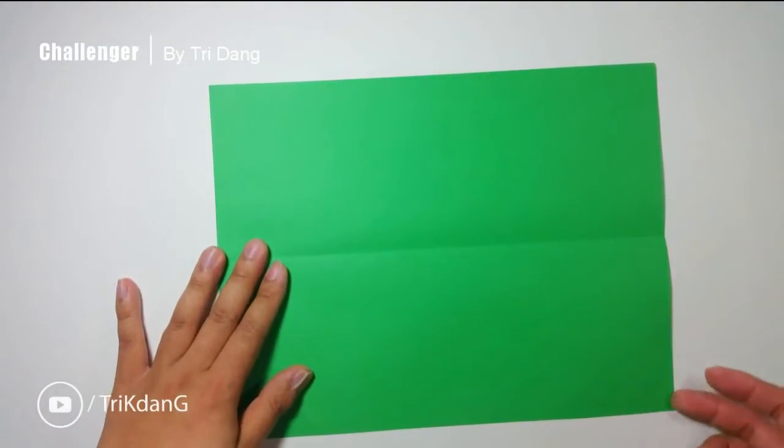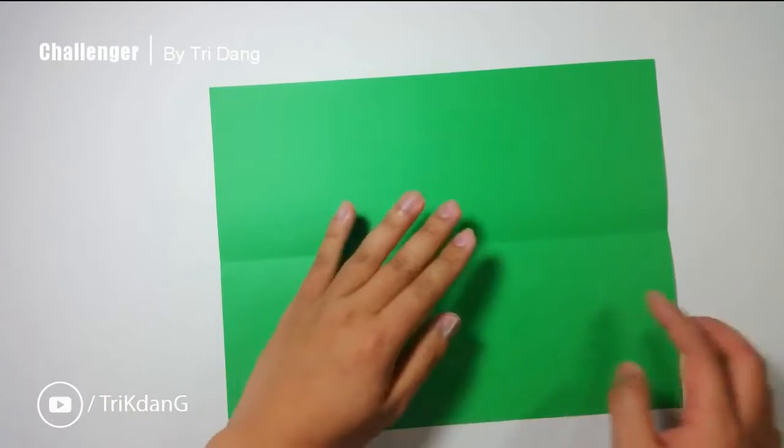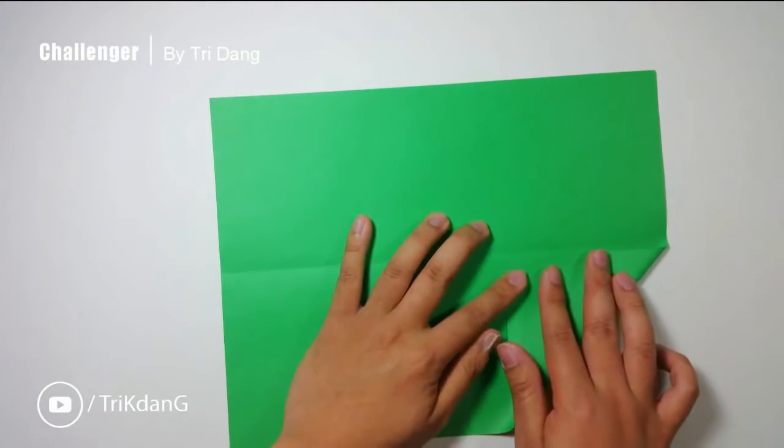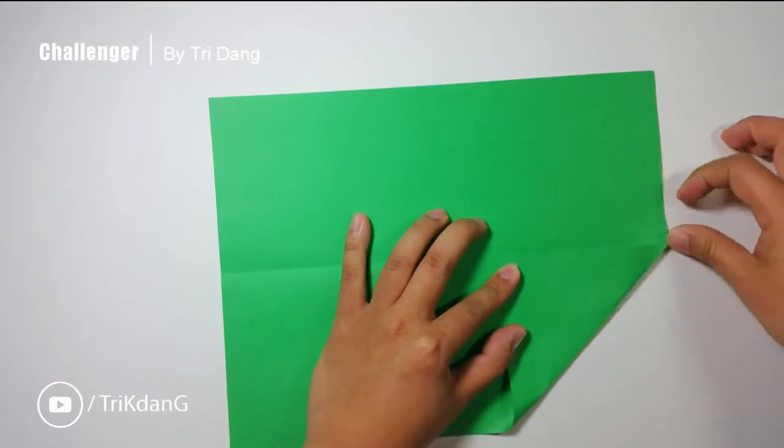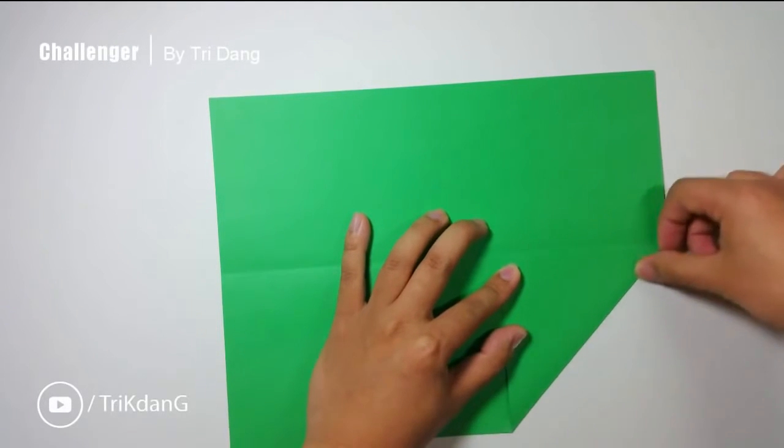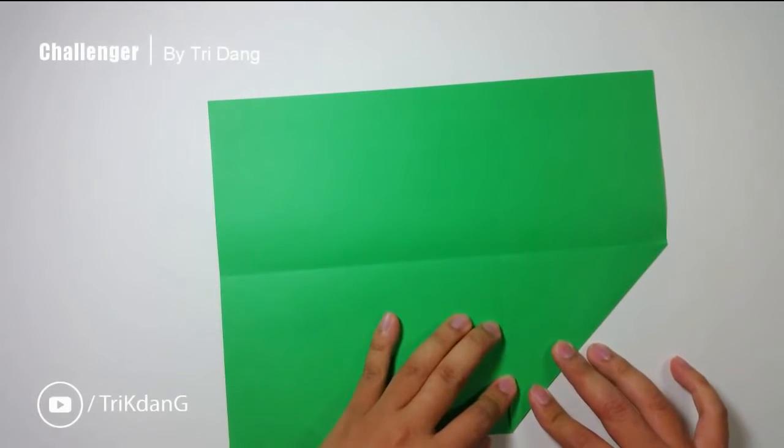Next, start from this edge, fold it to the center crease, and repeat the same fold for the opposite side.